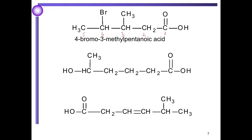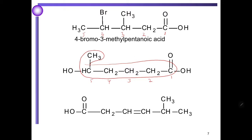We look at structure number two. Choose the longest chain first, with carboxylic acid as carbon number one. We have hydroxy at carbon number five. The longest chain is hexane. The name for structure number two is 5-hydroxy-hexanoic acid.